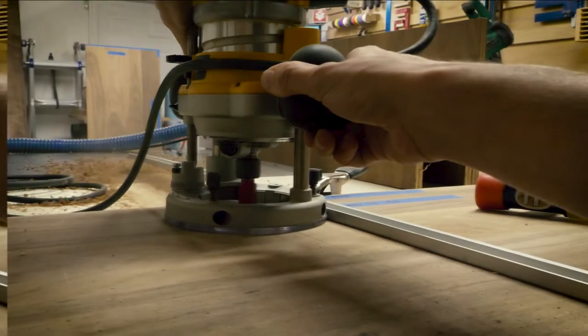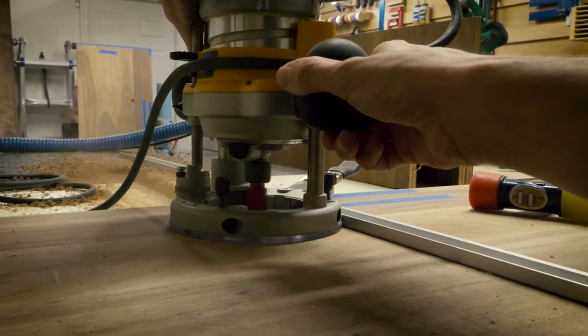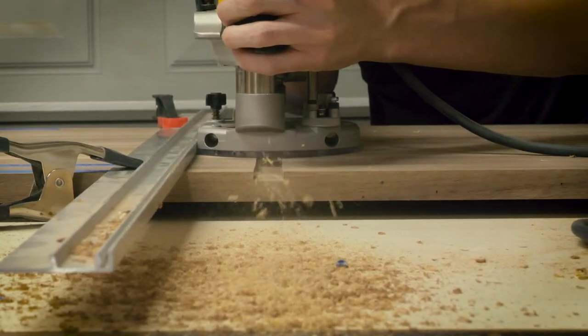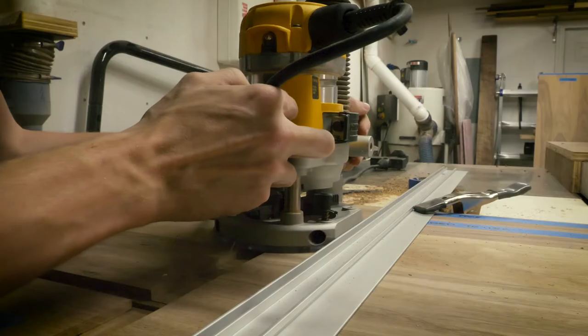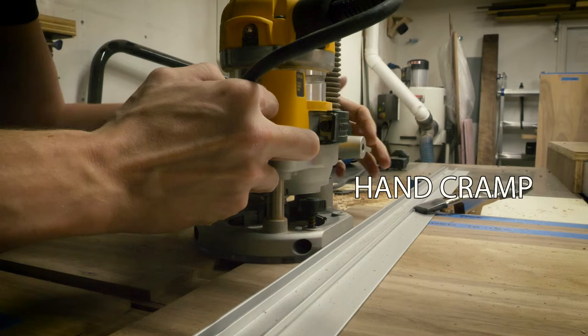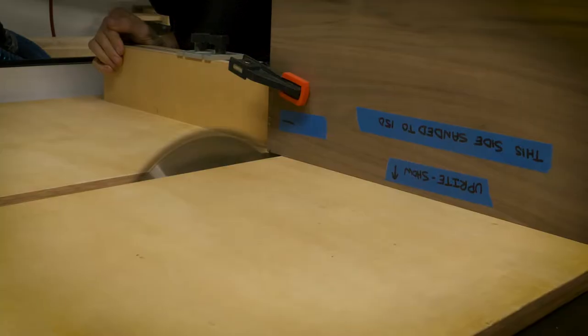For the top panel and these center dividers I used a stopped dado which I cut in with the router. I also cut in channels for LED strips and some sub channels that are under the joinery for wiring for the LEDs later.